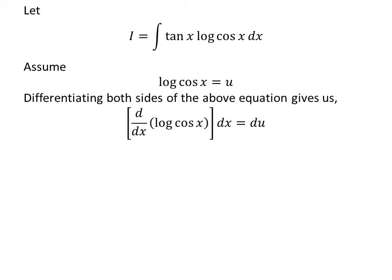Taking differential of both sides gives us derivative of natural log of cosine of x with respect to x times differential of x is equal to differential of u.